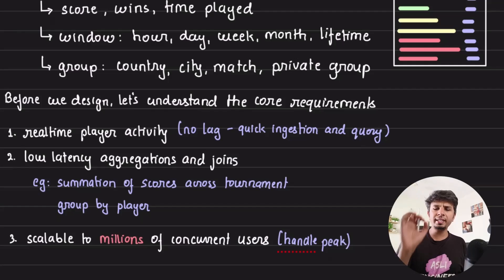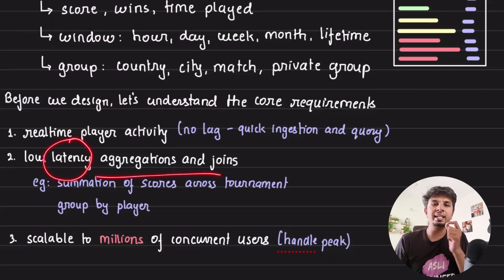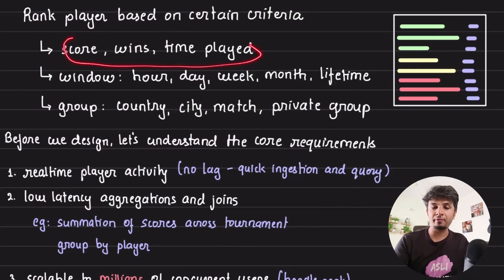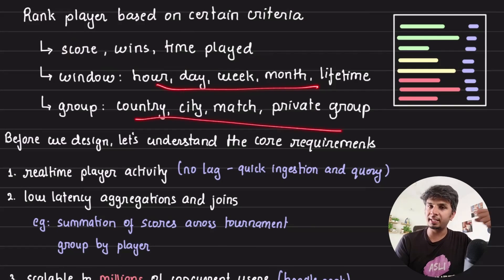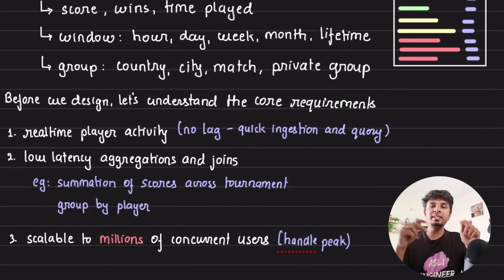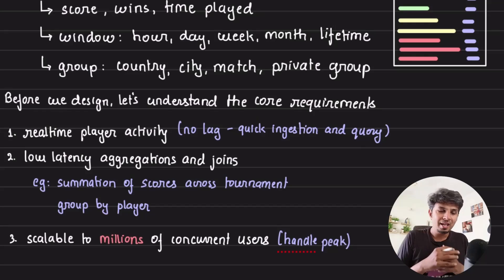First, we need real-time player activity, which means there should not be any lag when the event came and when it is available for query. Second, we need to support low latency aggregations and joins across time, various groups, and multiple such aggregations, all of this needs to be done in a very low latency fashion. Whatever we are doing needs to be scalable for millions of concurrent users at its peak. These are the three key requirements for the system.